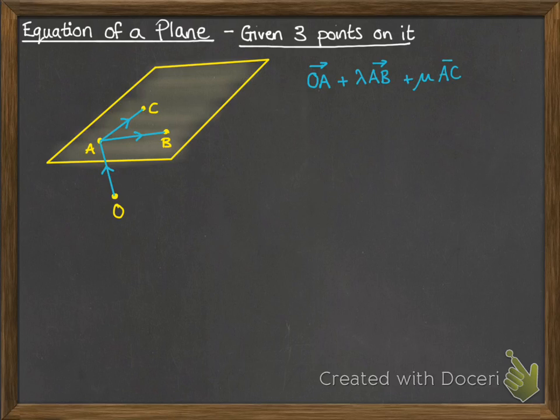So this would be then moving from A, we would add a multiple of AB and a multiple of AC. Now that would help us to get to any point R. We can use OA to get us up onto the plane, and then any multiple of AB to move in the direction we need to get to that point R.